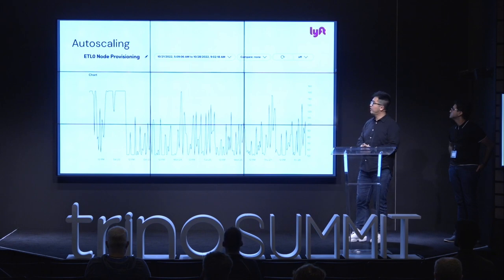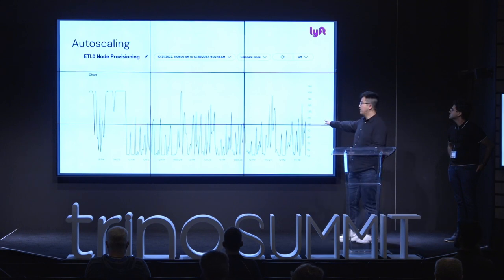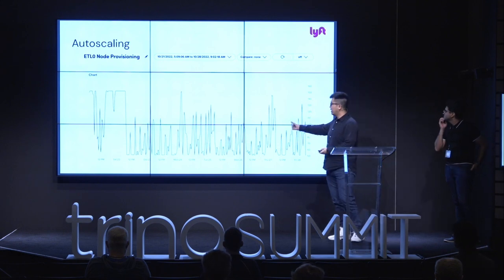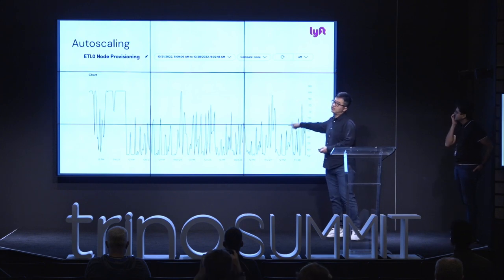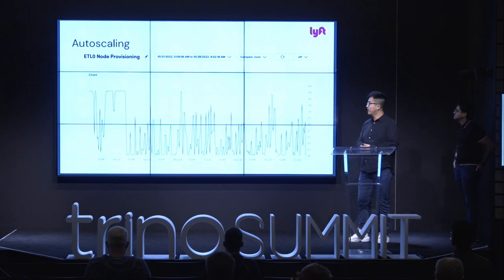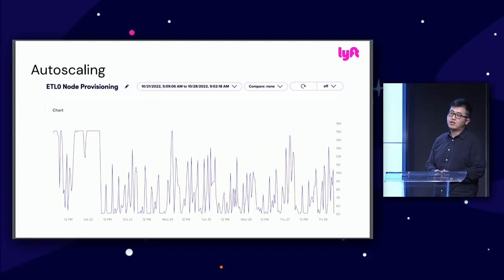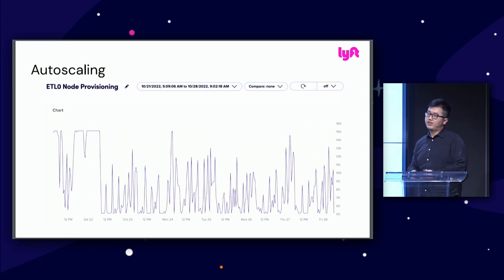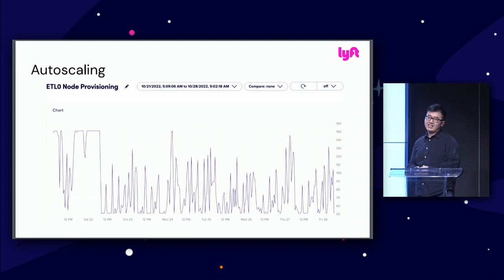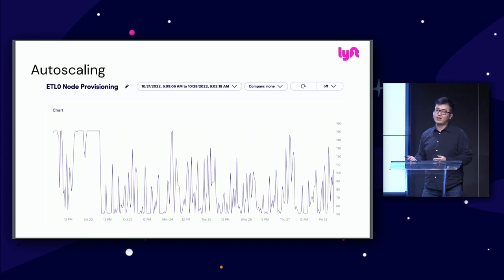This is how auto-scaling works for one of our ETL clusters — one week of data. Looking at one day, there are not too many back-and-forth fluctuations, meaning it's doing pretty reasonable scaling. For interactive query clusters, you can clearly see a spike around 9 a.m. every day, scaling down a lot after 5 or 6 p.m., and being quiet overnight — which is very expected.